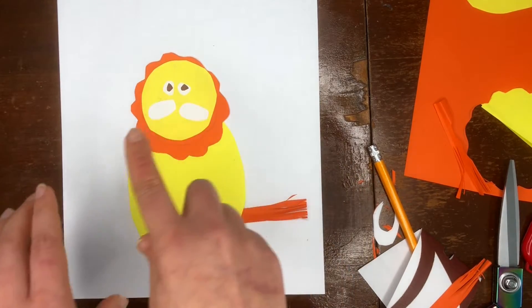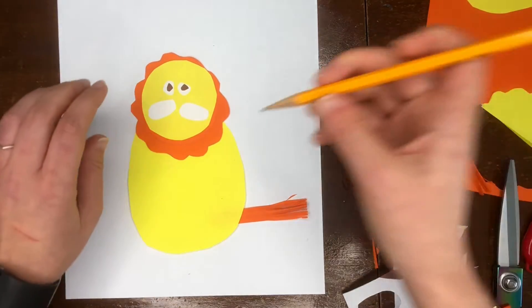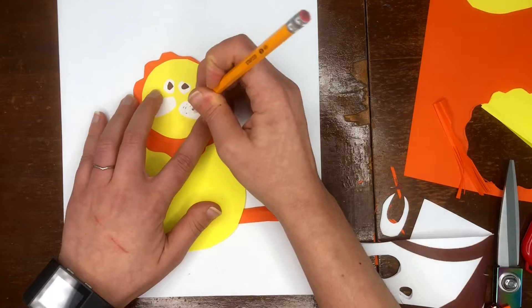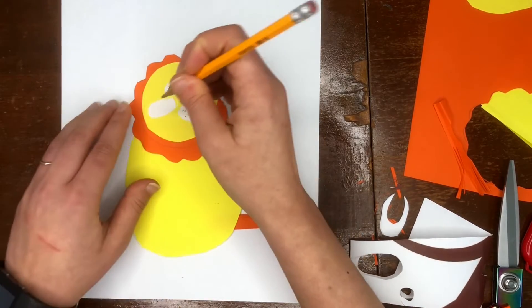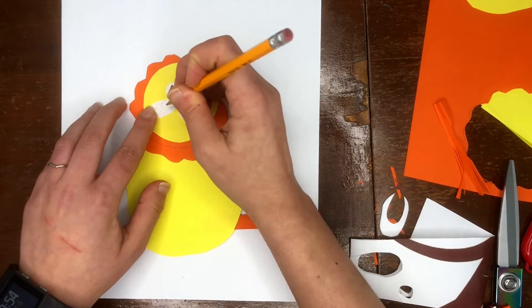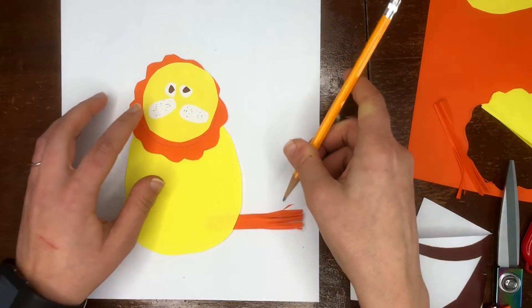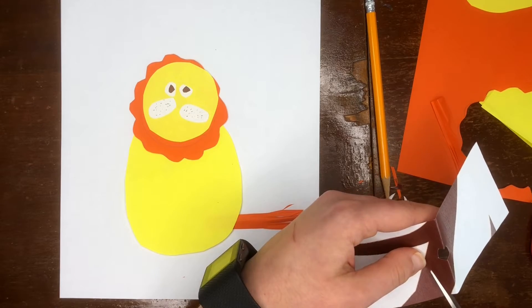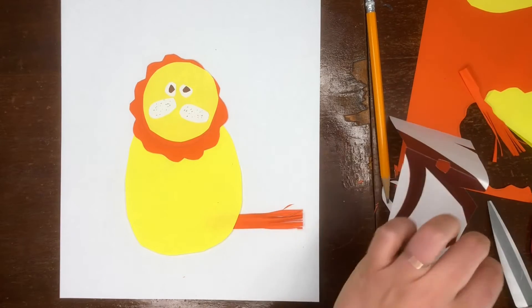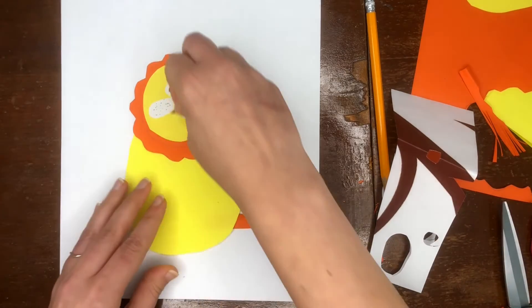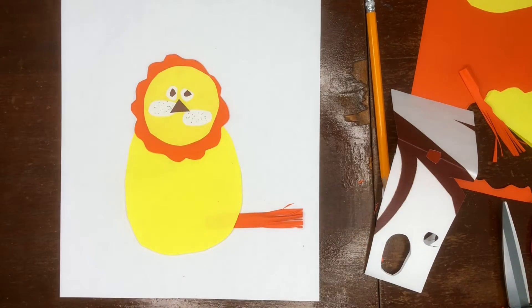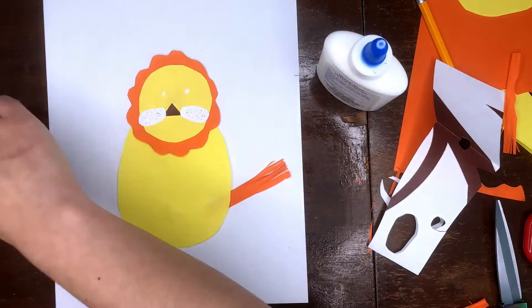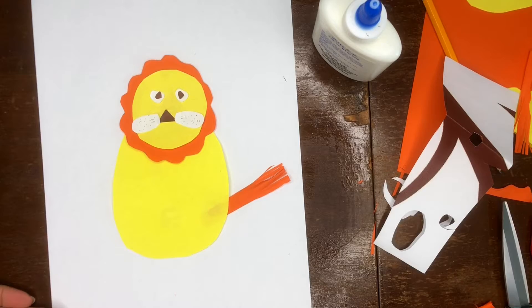Now, we can add in some details like some speckles on these white ovals. Oh, I can't forget the nose. A little triangle. And now, we're gonna glue that all together. And there is our little lion.